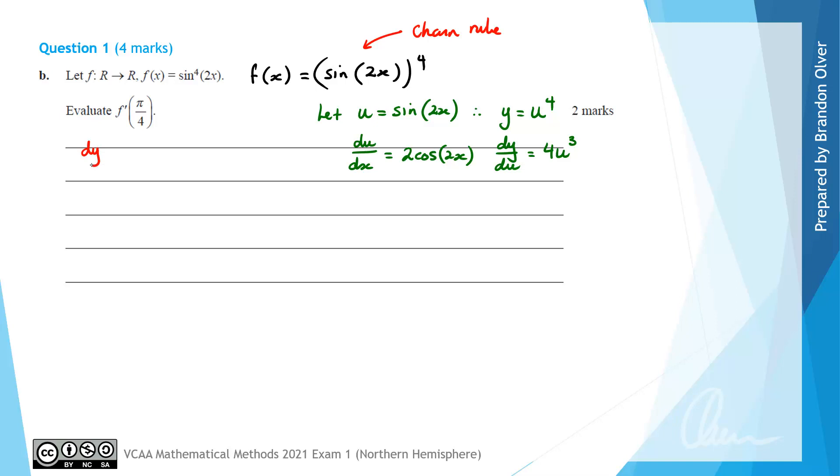Next, looking at our formula sheet, we know that dy/dx is equal to dy/du multiplied by du/dx. So therefore, if we just start by finding f'(x), that's going to equal dy/du, which is 4u^3, which we can actually write as 4, and then u is actually sine of 2x. I'm going to put that back in there, and that'll be cubed. And then we still multiply that by 2cos(2x).